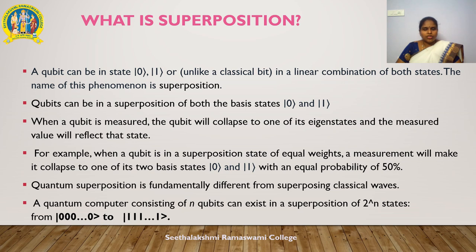Quantum superposition is fundamentally different from superposing classical waves. A quantum computer consisting of n qubits can exist in a superposition of 2^n states. In contrast, superposing n classical waves only gives n frequencies. Adding classical waves scales linearly, whereas the superposition of quantum states is exponential.